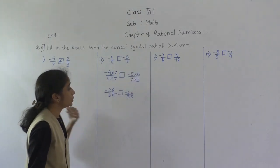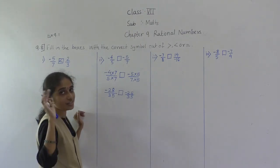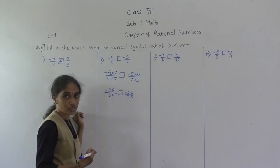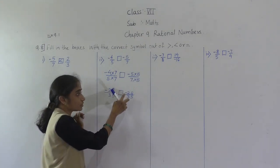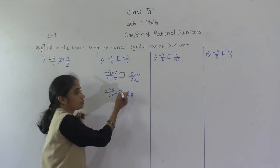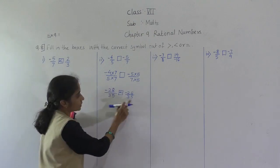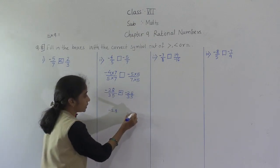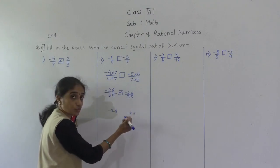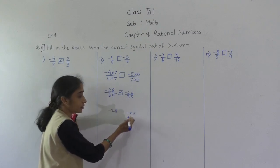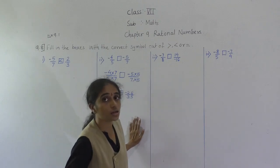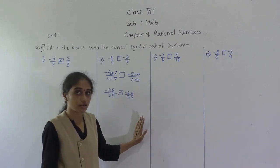Now denominators are equal (both 35). Both numerators are negative: comparing minus 28 and minus 25, minus 25 is greater. So minus 5 upon 7 is greater than minus 4 upon 5, as you have learned in the integer lesson.